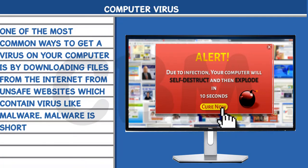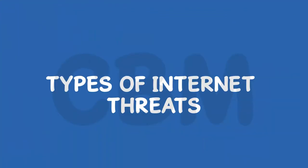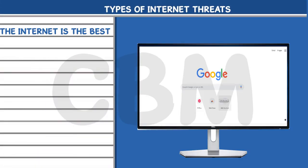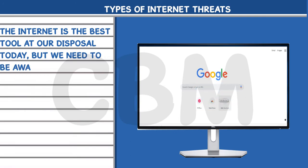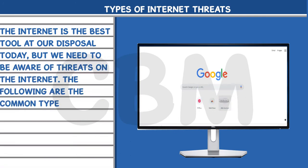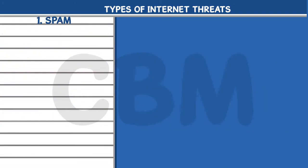Malware is short for malicious software. Types of Internet Threats: The Internet is the best tool at our disposal today, but we need to be aware of threats on the Internet. The following are the common types of Internet threats. 1. Spam.